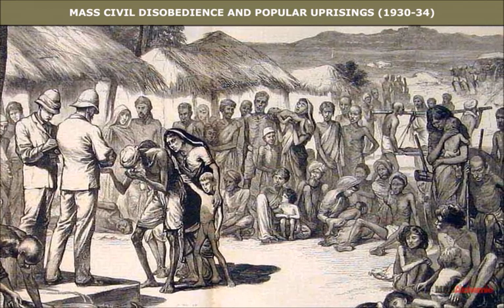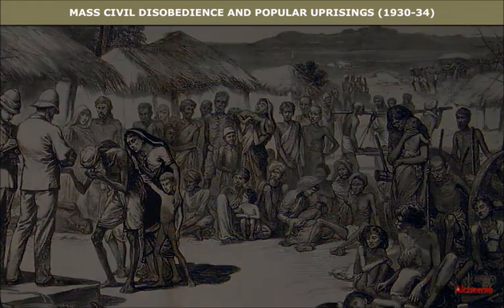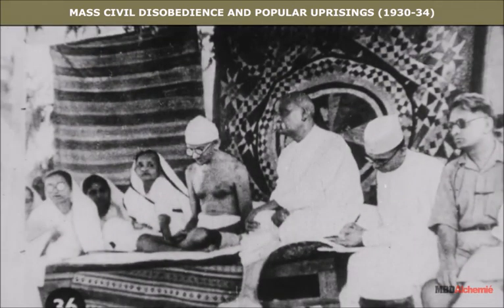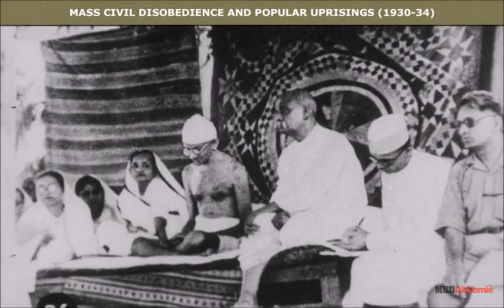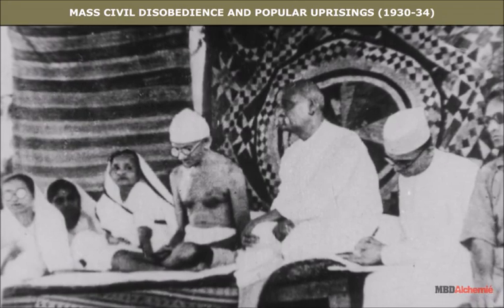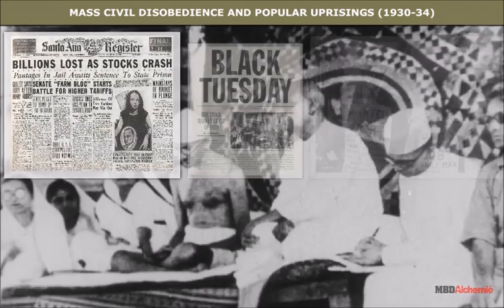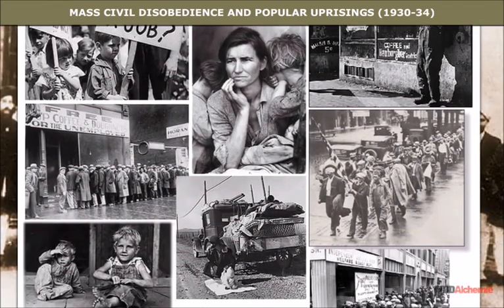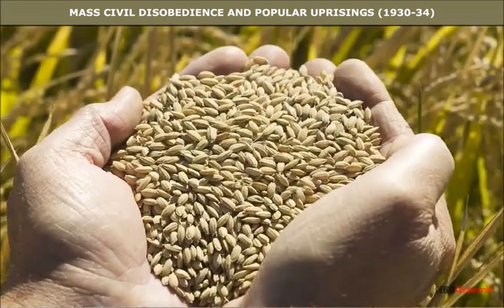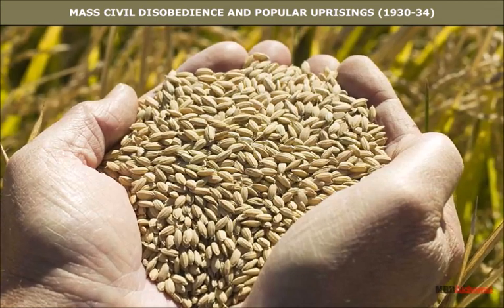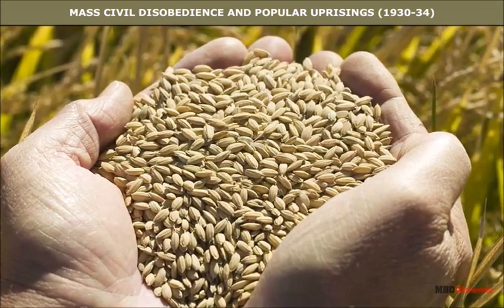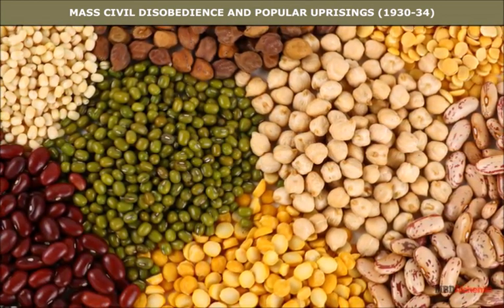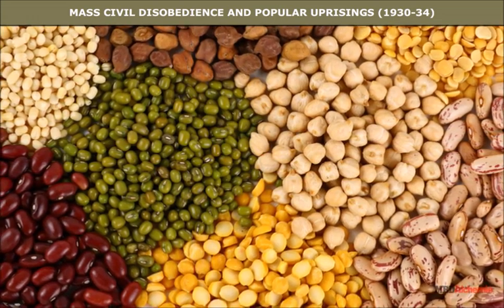The peasants of Bardoli had already offered Satyagraha in 1928 under the leadership of Sardar Patel. Their no-tax campaign was a partial success, and the Congress decided to use the same non-violent weapon of Satyagraha against the government on a large scale. Economic Depression: The effects of the worldwide economic depression played a major role in popular uprisings. Agricultural prices began to fall from 1926 and collapsed after 1930. As demand for agricultural goods fell and exports declined, peasants found it difficult to sell their harvest and pay their revenue.